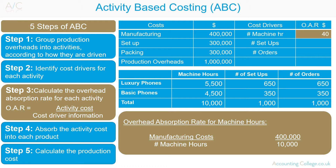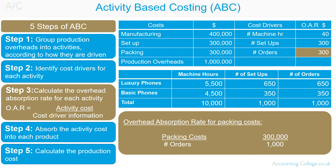The overhead absorption rate for manufacturing costs would be the manufacturing costs divided by the number of machine hours: $40 per machine hour. The overhead absorption rate for setup costs would be setup costs divided by the number of setups: $300 per setup. The overhead absorption rate for packing costs would be packing costs divided by the number of customer orders: $300 per order.